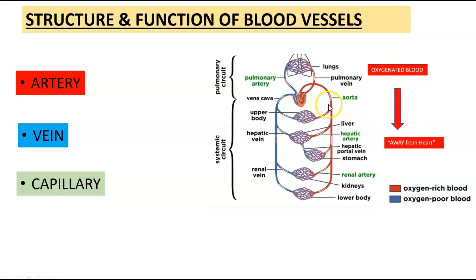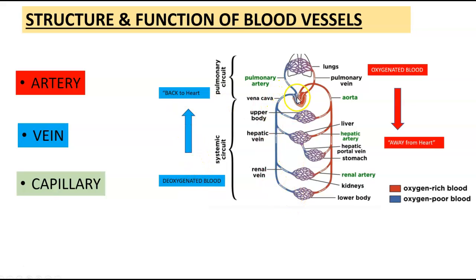Once blood is dropped off to their target tissues and organs, blood needs to come via the venous system, which has deoxygenated blood, and return to the heart. Once in the heart, in the right atrium, blood goes to the right ventricle and out of the heart to the lungs to pick up oxygen once again. The vessel located here is the pulmonary artery — this is the only artery in the body that is deoxygenated. Everywhere else in the human body it is the complete opposite: all arteries carry oxygen, and all veins carry deoxygenated blood, except for these two.